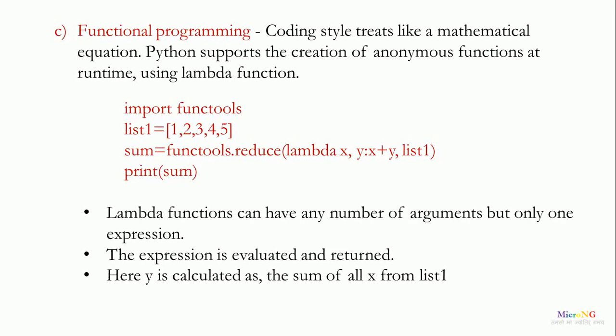And the y will be the summation of all the values of x present in the list 1. So, lambda functions can have any number of arguments but only one expression. In this example, we have used two arguments x and list 1 but only one expression y colon x plus y. The expression is evaluated and returned. Here, y is calculated as the sum of all x from list 1. So, we have not used any for loop here. We are using mathematical equations or functions which will be dynamically created during runtime because of lambda function.